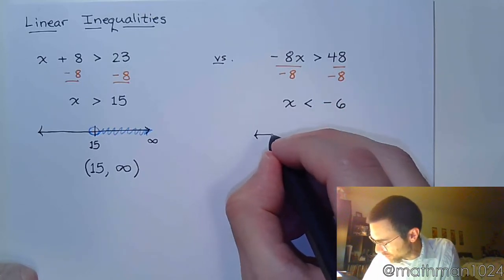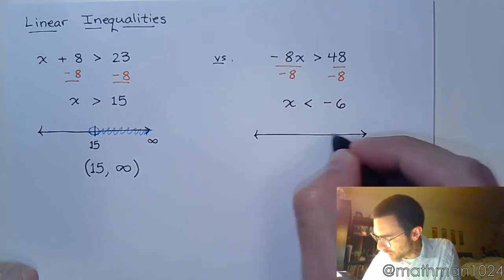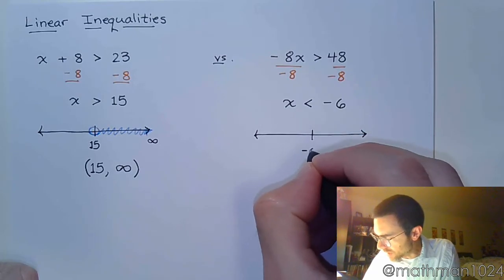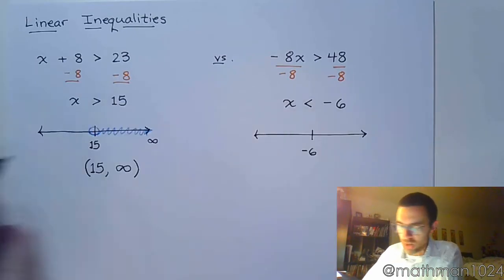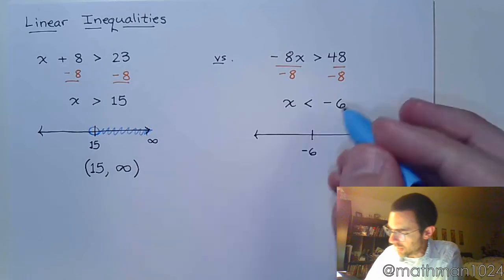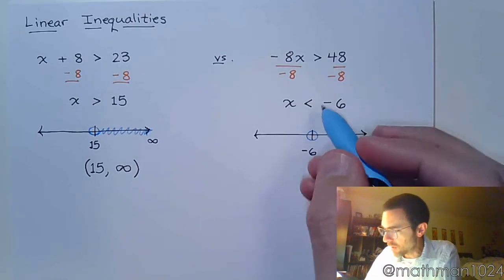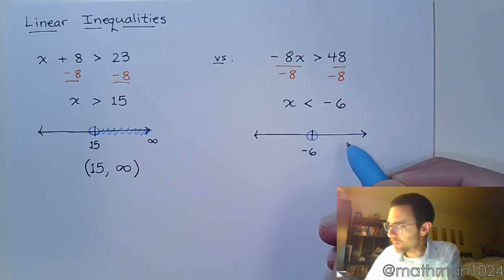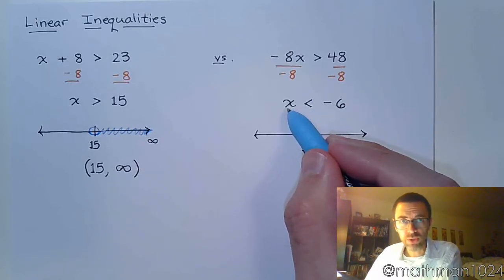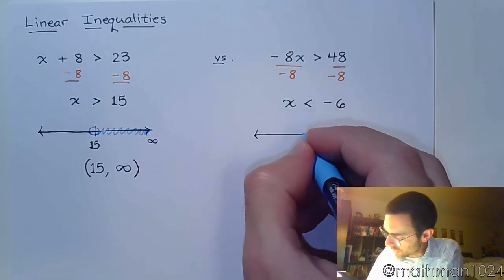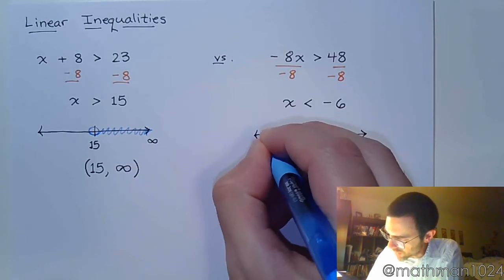Over here on this other example, the only number that we care about is negative 6. We are not including negative 6 because of the way the inequality is structured. X being our solutions are those values that are less than negative 6, to the left of negative 6.